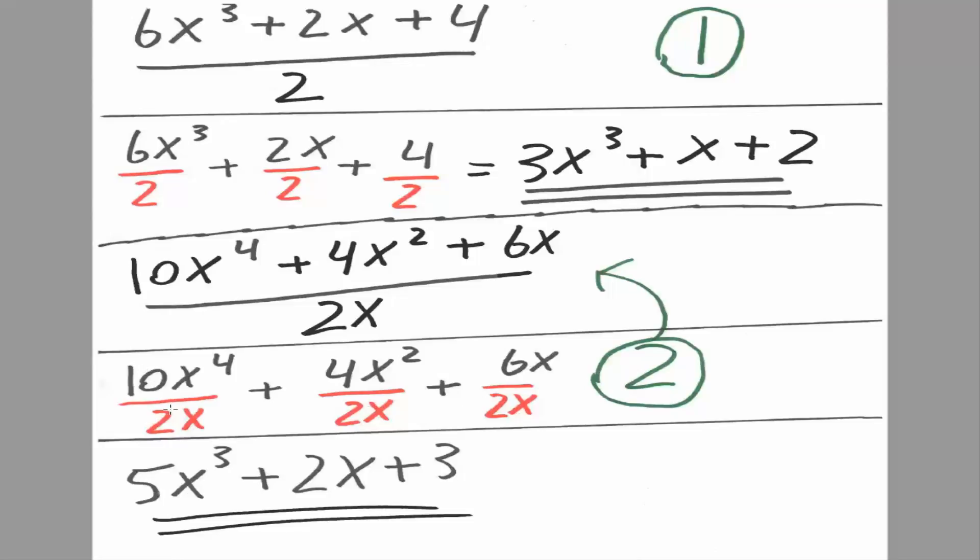So 10 divided by 2 is 5. x raised to the 4th divided by x is x cubed. Simply subtracting 4 minus this initial 1. So 3.